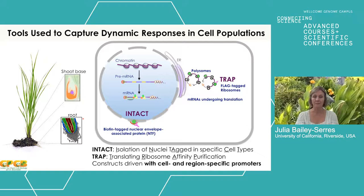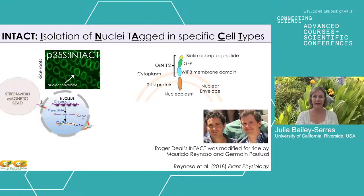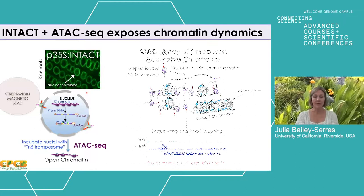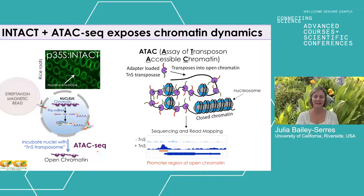The work I'm going to talk about today was primarily done by two incredible postdoctoral researchers: Mauricio Reynoso, who's now in Argentina leading his own group, and Germán Paluzzi, who's now a farmer and beekeeper in France. One of the first things they did was improve INTACT for rice by altering the construct so that the chimeric gene engineered by Roger is now anchored in the nuclear envelope, allowing very easy isolation of nuclei using a streptavidin bead, enabling technologies such as ATAC-seq — the assay of transposon-accessible chromatin.